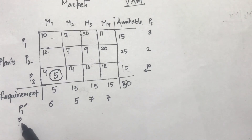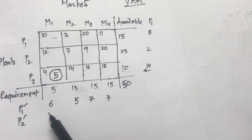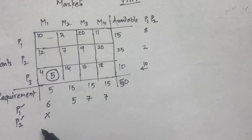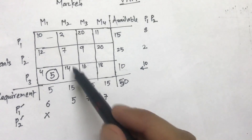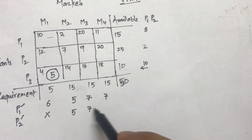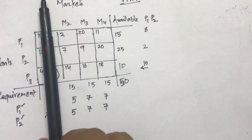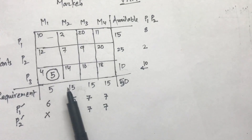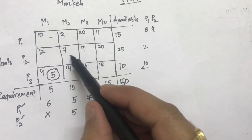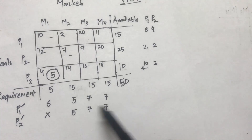Now calculating second penalties: market M1 required 5 units and all 5 have been allocated, so it's removed from further consideration. The column penalties remain the same at 5. For the rows, since column M1 is excluded, the first row's minimum is now 2 and second minimum is 11, giving a difference of 9. The second row remains at 2, and the third row's minimum is 14 and 16, difference of 2.